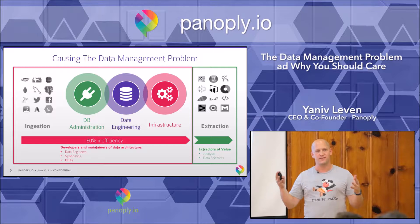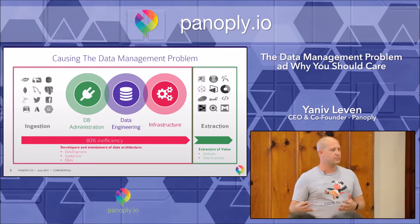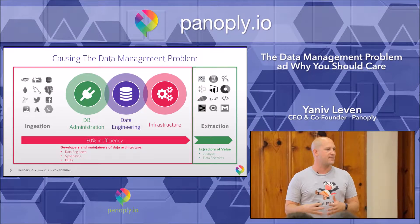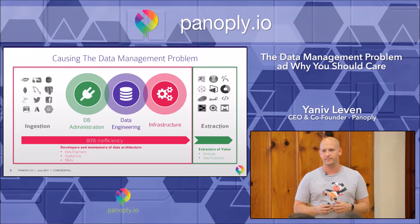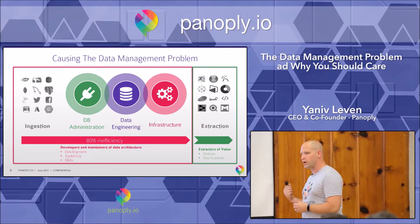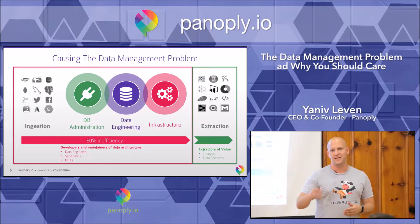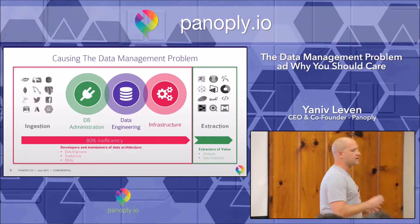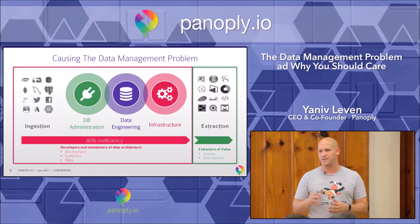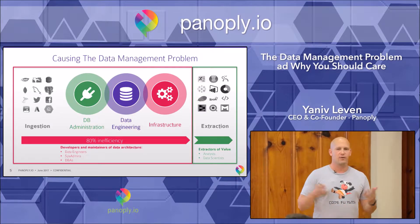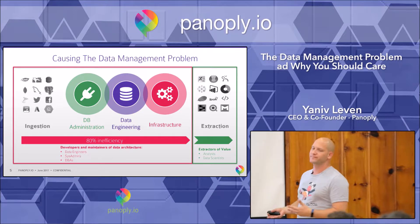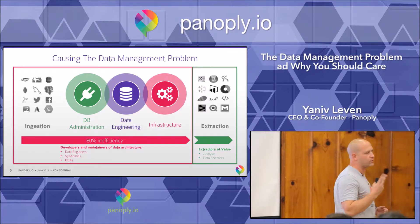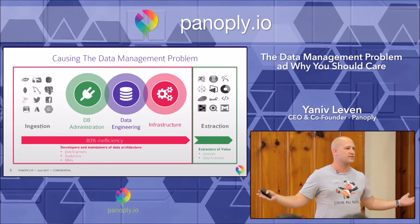How big is this problem? In recent polls, data scientists from various organizations have claimed that 50 to 80 percent of their time is spent on inefficient tasks. There was a Gartner report in March 2017 about CDOs and CIOs stating that their number one focus area for 2017 is operational efficiency — because for every dollar spent on data scientists, they're actually getting two months' worth of value for a year's salary.